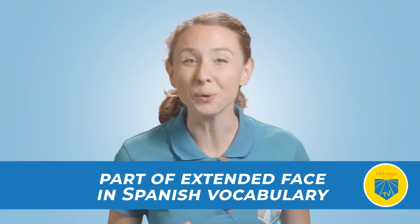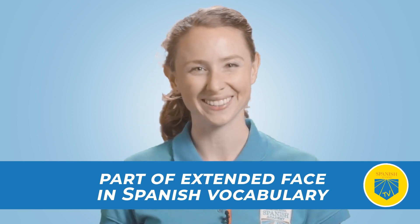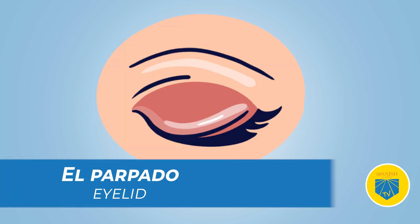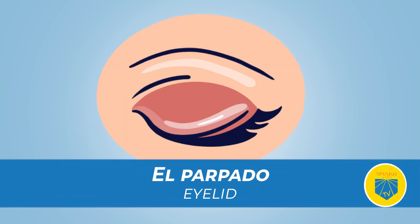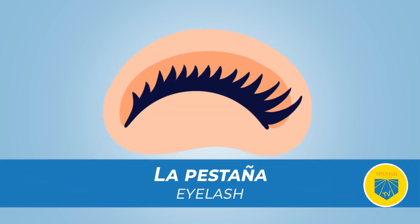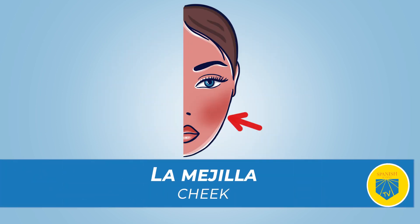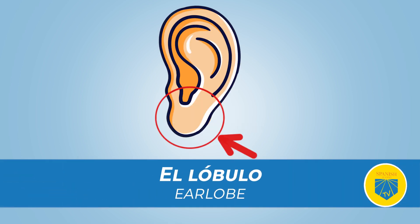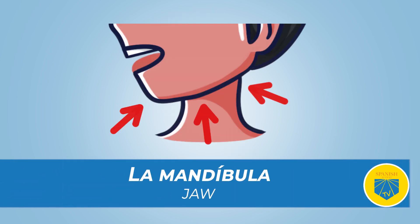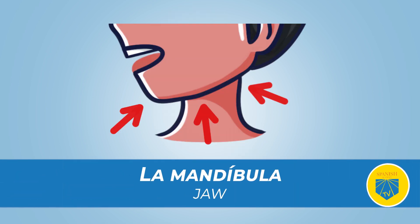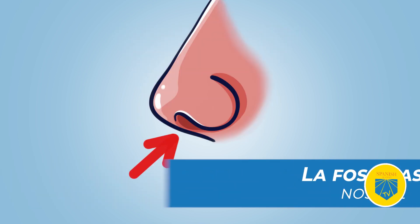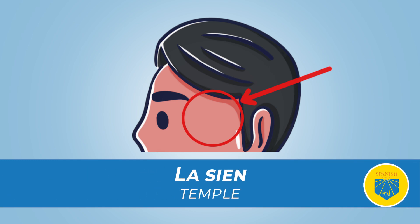Now let's extend our vocabulary with a few more words in Spanish for the face: la ceja (eyebrow), el parpado (eyelid), la pestaña (eyelash), la mejilla (cheek), el lóbulo (earlobe), la mandíbula (jaw), la fosa nasal (nostril), la cien (temple).